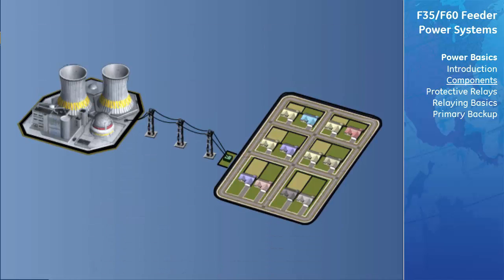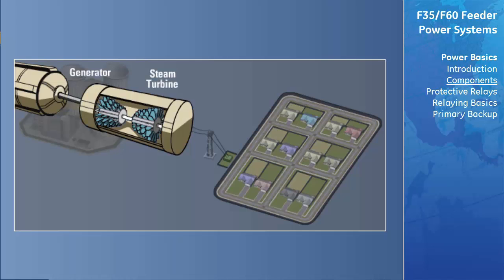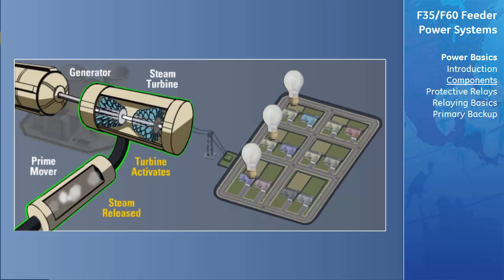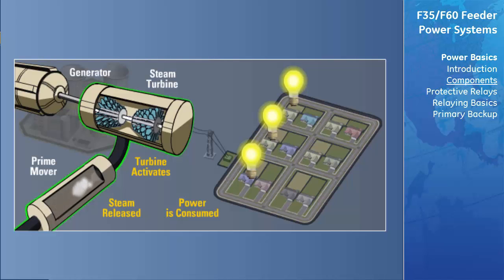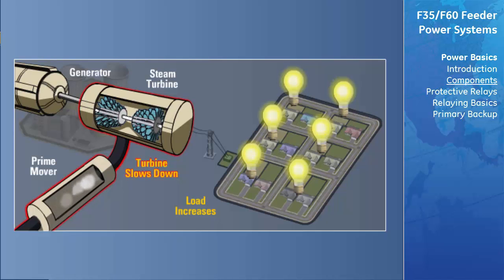Let's take a look at a simple system consisting of a generator, steam turbine, prime mover and control system, and a residential load. The generated power must equal the demand, which is constantly changing. As the load increases, the generators would tend to slow down, resulting in a reduction of output voltage and frequency.